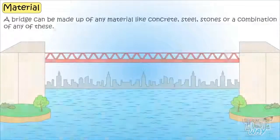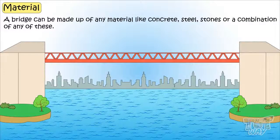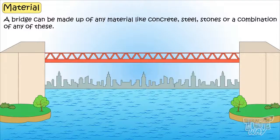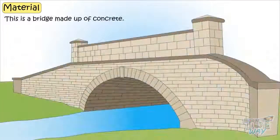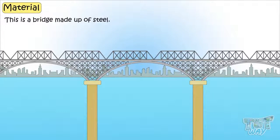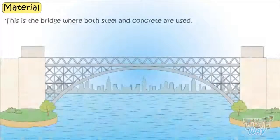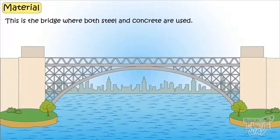A bridge can be made up of any material like concrete, steel, stones, or even a combination of any of these. This is a bridge made up of concrete. This is a bridge made up of steel. And this is a bridge where both steel and concrete are used.